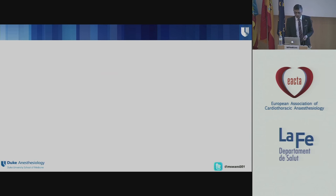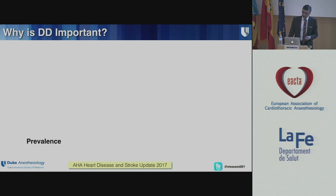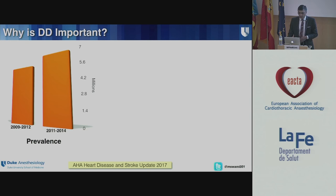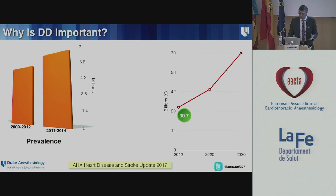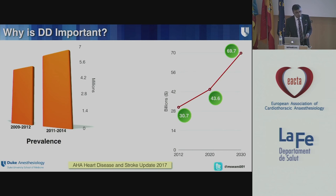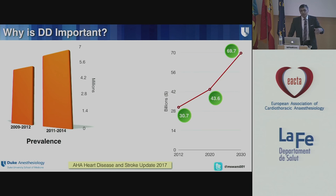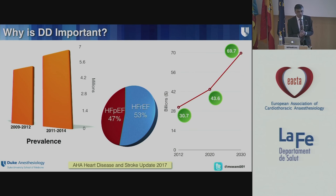Why is it important? Why should I even care? According to the 2017 AHA heart disease and stroke update, the prevalence of heart failure is quite large and it's increasing. The cost has gone up from $30.7 billion in 2012 and is projected to reach about $70 billion. It becomes real money when you talk about $69.7 billion — it is an expensive issue. And when you consider heart failure with preserved ejection fraction versus heart failure with reduced ejection fraction, they're almost half and half.